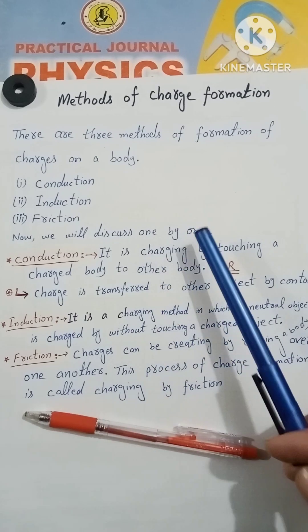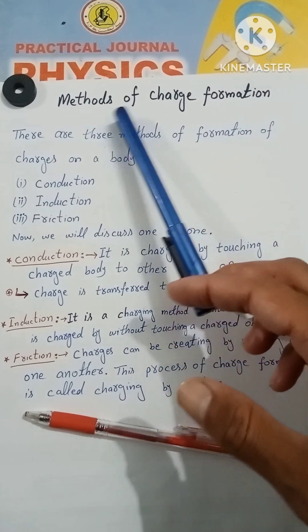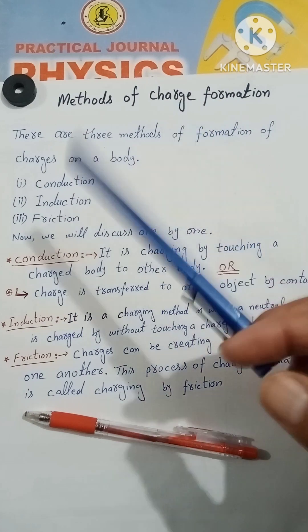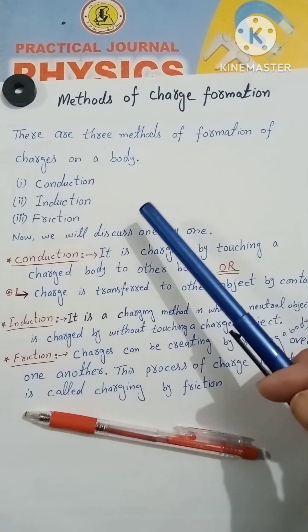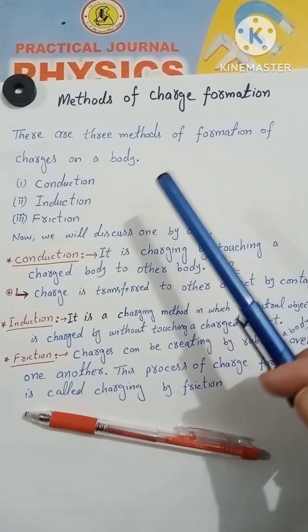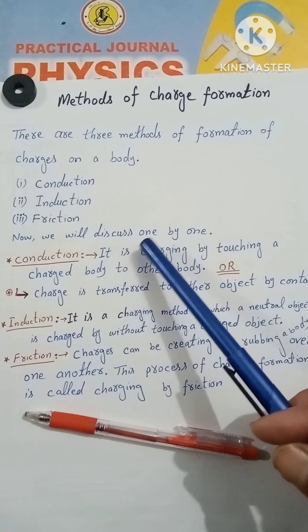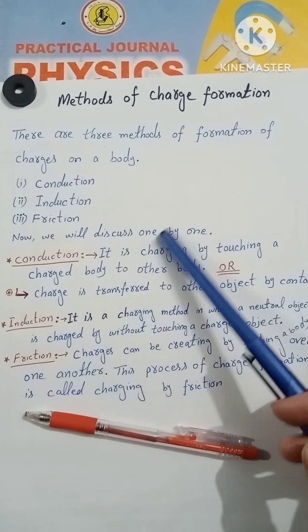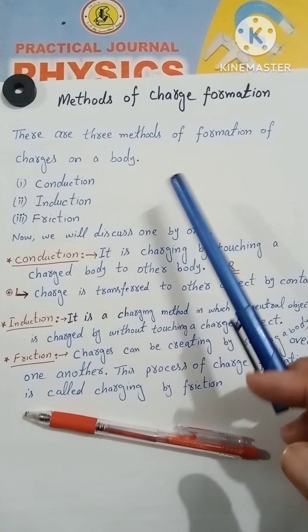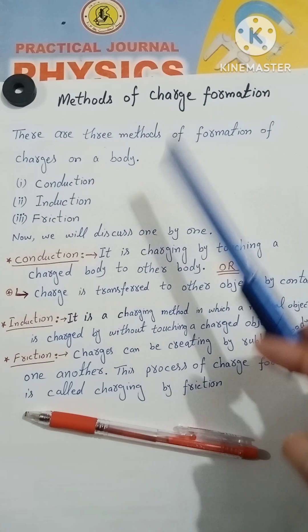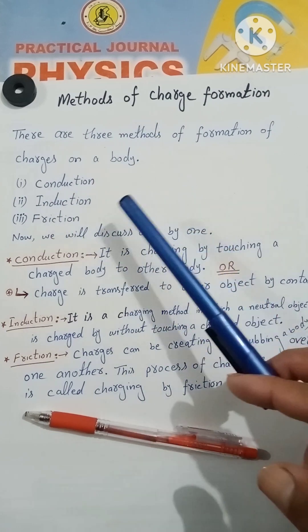Hello guys, today we are going to discuss methods of charge formation. As we know, charge is a property of matter or subatomic particles through which these subatomic particles attract or repel each other. As we have discussed in the last topic, electrostatic force, here we are going to discuss how charge can be created on a body.